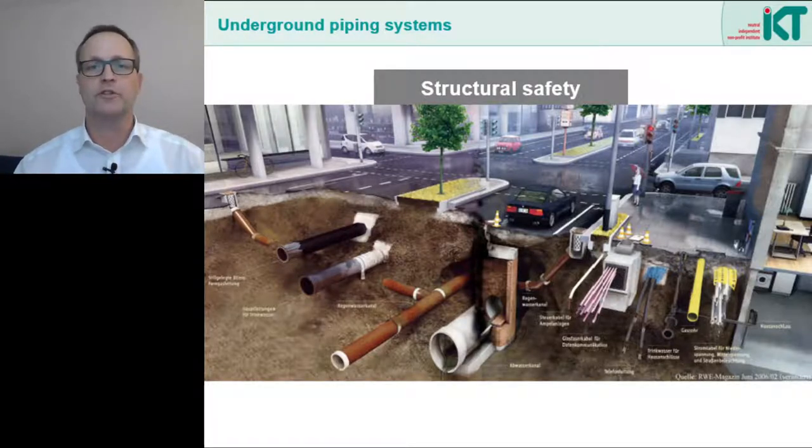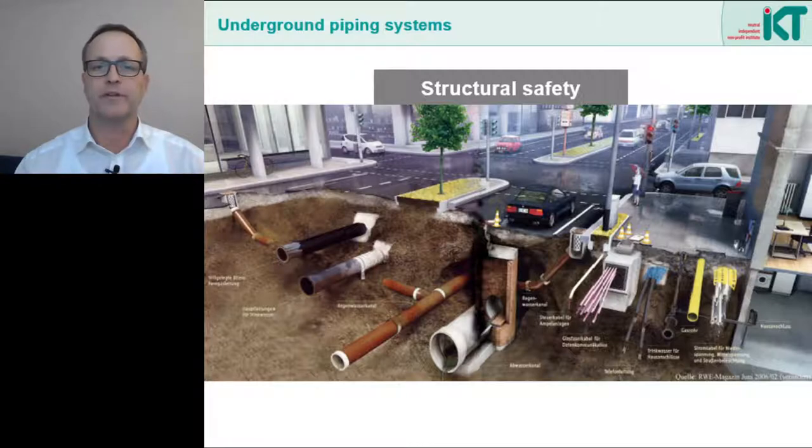Basically two things are important for stability and structural safety. Number one, the pipe must be able to absorb the internal loads. That means a pipe that is under internal pressure must be able to absorb this pressure without breaking apart. Number two, external loads occur when the pipe is underground. That are earth loads, traffic loads or the pressure of the groundwater. All these loads must not overstress the pipe, so we need a proof of stability and structural safety.